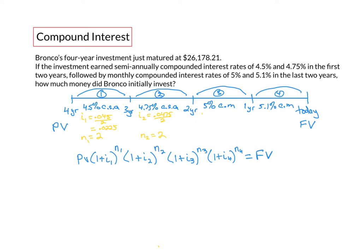For time interval 3, I3 would equal 0.05 divided by 12 because it's compounded monthly this time. n3 would equal 12, 12 compounding periods in that time interval.